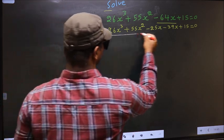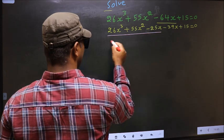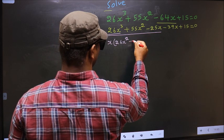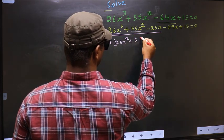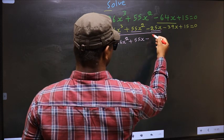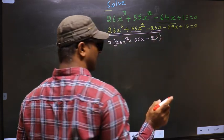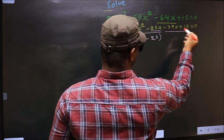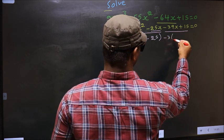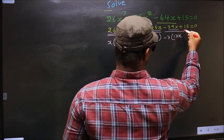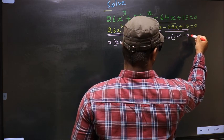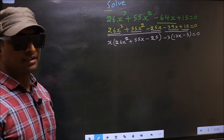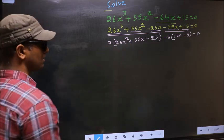What can be taken out common from these three terms is x. So here you get 26x squared plus 55x minus 25. In the same way, what can be taken out common from these two terms is minus 3. So here you get 13x and here you get minus 5 equal to 0. Now in this equation, we have come across a quadratic.